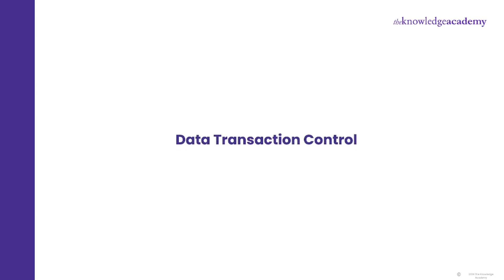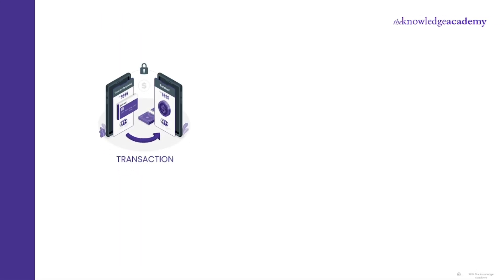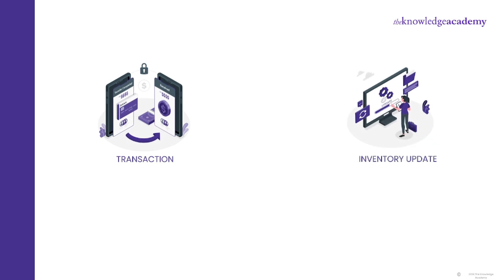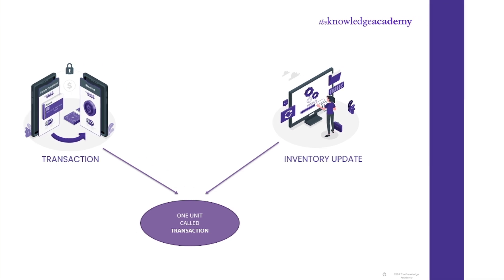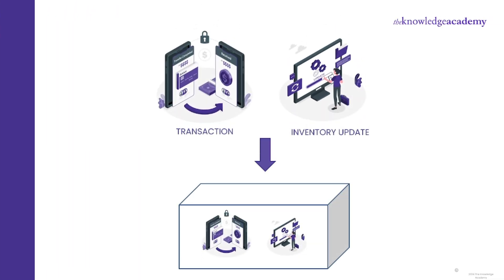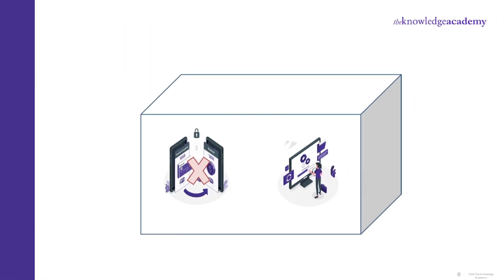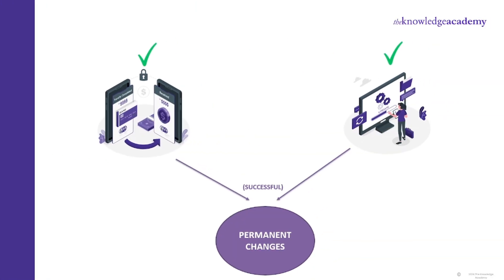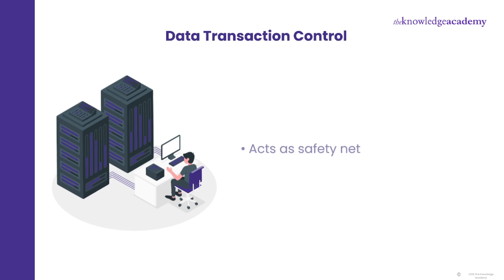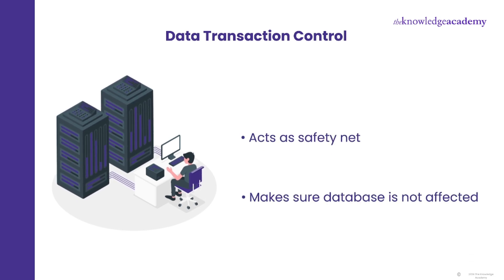The next advantage is data transaction control. Imagine you're transferring money from one account to another and updating inventory levels simultaneously in a database. With SQL, you can group these operations into a single unit of work called a transaction. If one task fails, like the money transfer, the whole transaction rolls back and everything goes back to how it was before, ensuring data integrity and consistency. But if both tasks succeed, you commit the transaction and the changes become permanent — it's like sealing a deal. SQL transactions act like a safety net, making sure your database stays in tip-top shape no matter what.